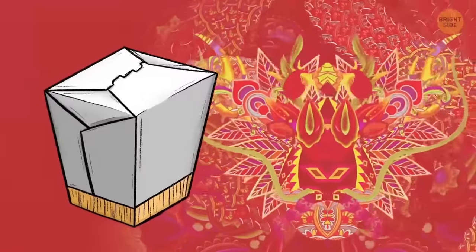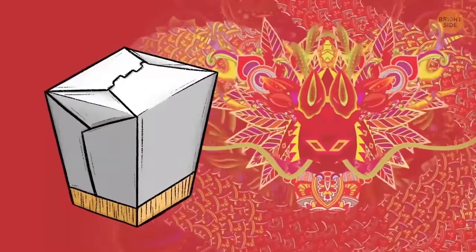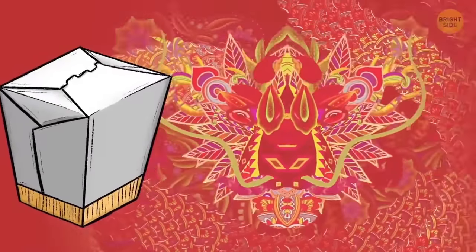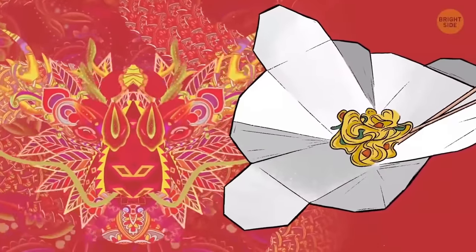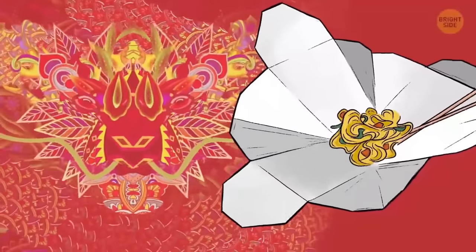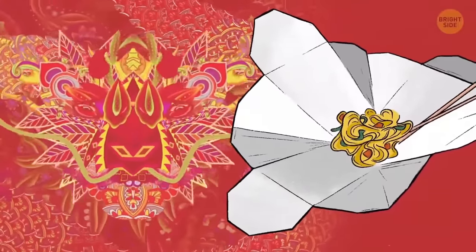A first-timer might think that Chinese takeaway boxes have a peculiar shape. Most experienced diners know that by unfolding the sides of these containers, you get a paper plate with the food already sitting on top.